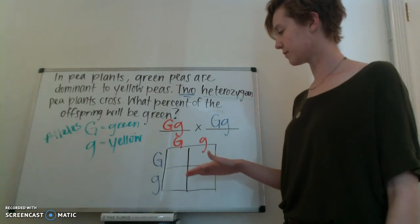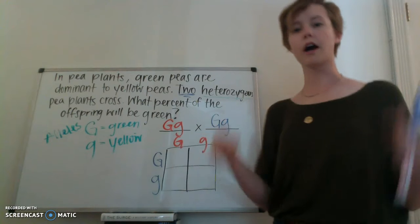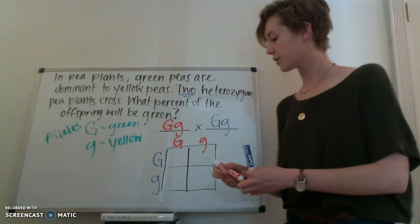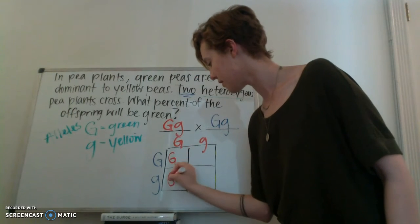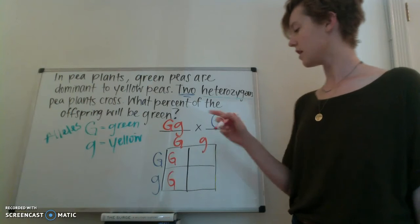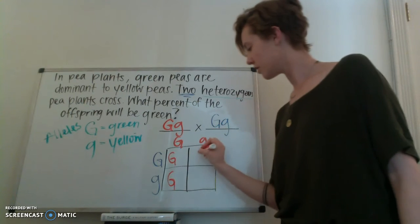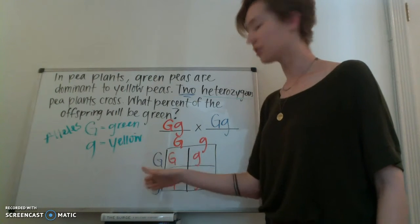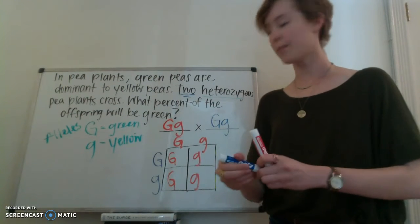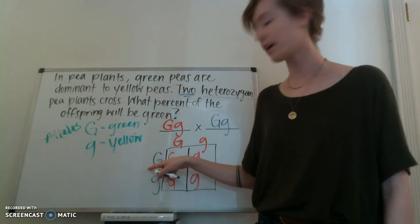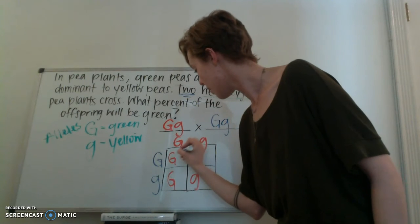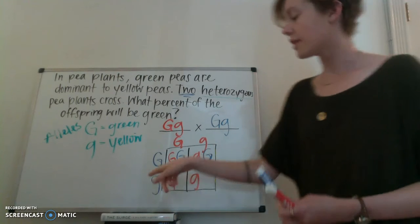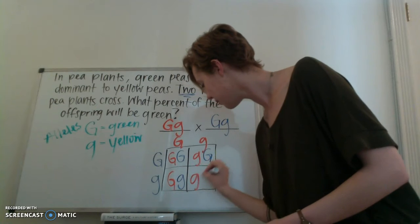So here's how these Punnett squares work. Look, this big G, I call him the king. And he is the king of this entire column. Which means, since he's on top, I drag him down into each box. I do the same thing with the little g. He's the king, I drag him into each box. But now I have this big G, little g on the side. So, a similar thing happens. This big G is king of the sides of this box. So I put a big G here, drag him over, put another big G here. Then I have this little g here, and I drag him across as well.